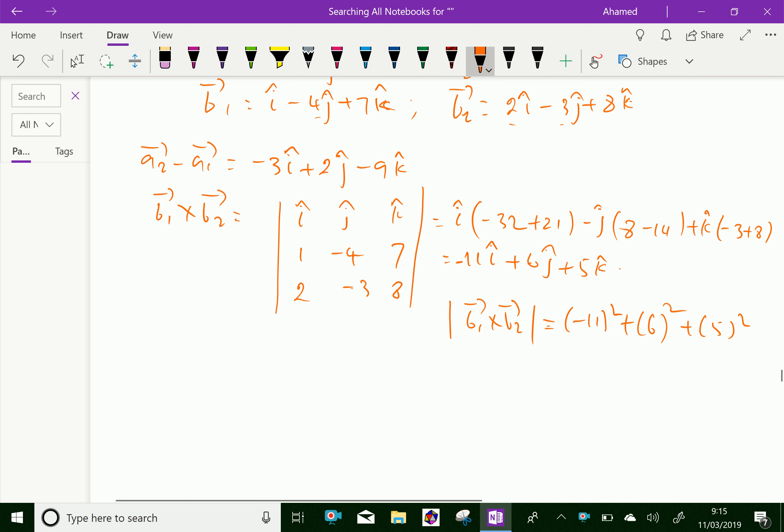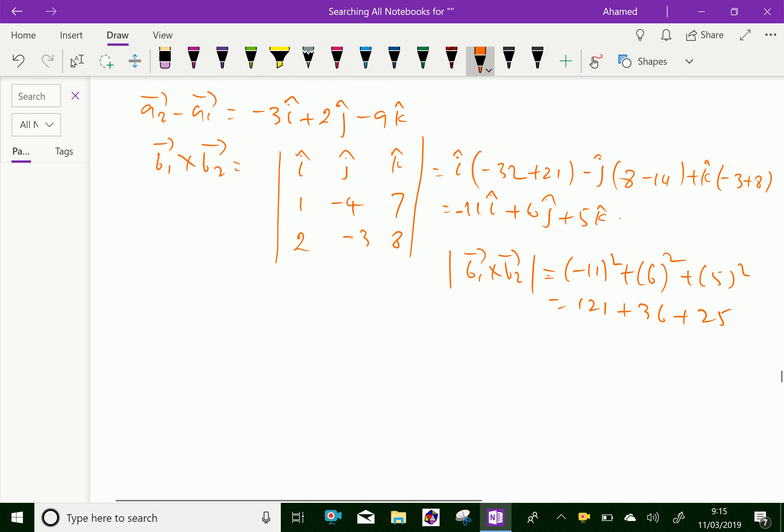Here 121 plus 36 plus 25 equals 182, then take the square root.